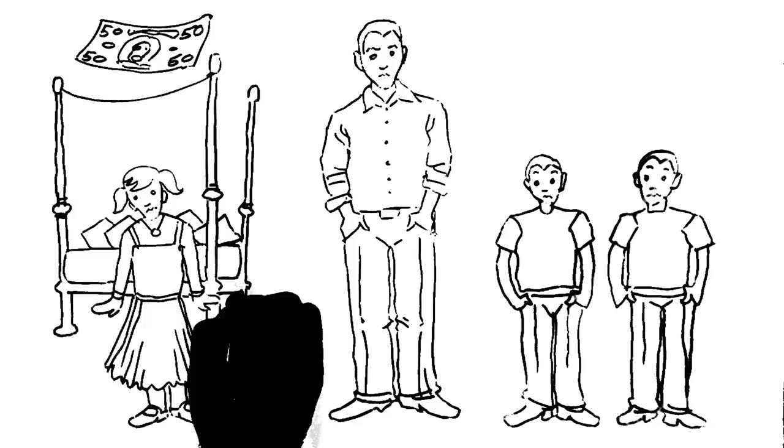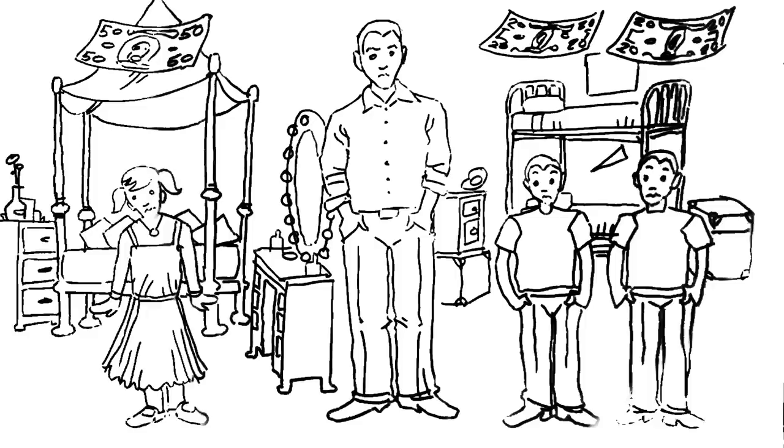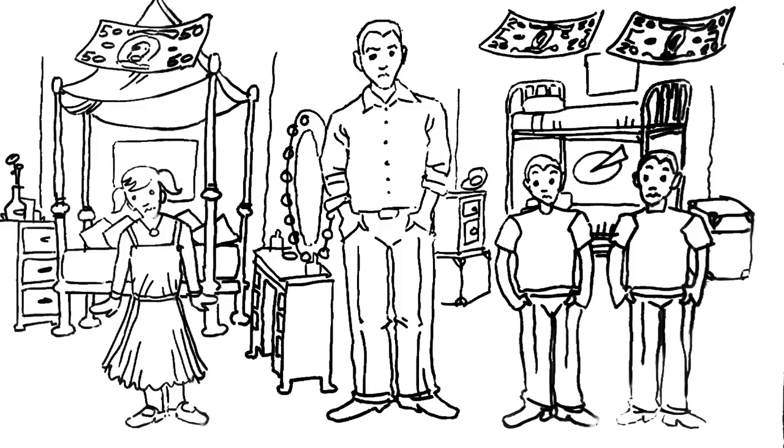So why might someone think social justice matters? Suppose I treated my three children very, very differently. I might give one an allowance of $50 a week and the biggest bedroom in the house. The other two might receive only $20 each and be cramped together in the same small room. Unless I've got some very good reason for doing this, most of us would probably say that what I'm doing is quite unfair, even unjust.